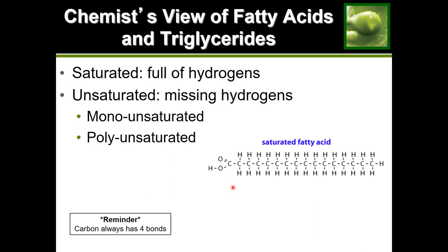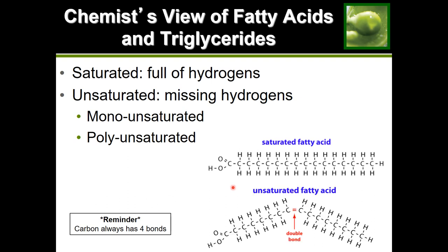If a fatty acid wasn't carrying hydrogen to its maximum capacity — if it was missing some hydrogens, not fully saturated — that's when we call it an unsaturated fatty acid. Looking at an example: up until the middle portion each carbon is carrying its maximum capacity of two hydrogens each, fulfilling its four-bond requirement.